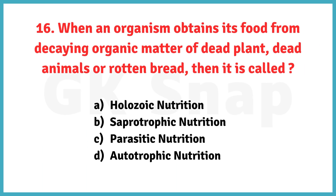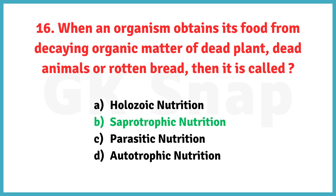When an organism obtains its food from decaying organic matter of dead plants, dead animals, or rotten bread, then it is called? Correct answer is option B. Saprotrophic nutrition.